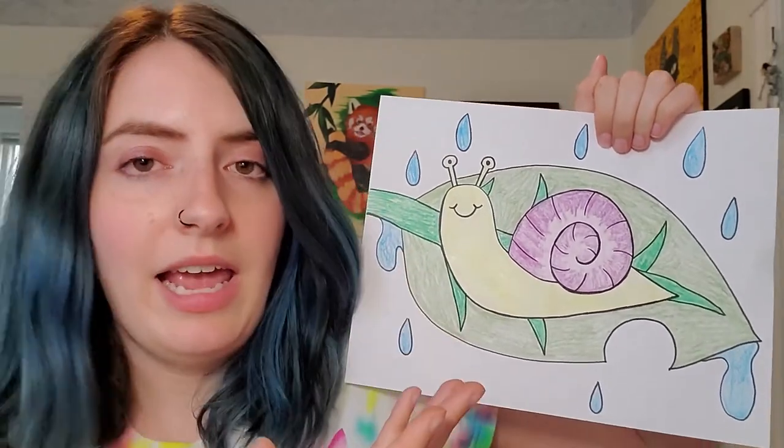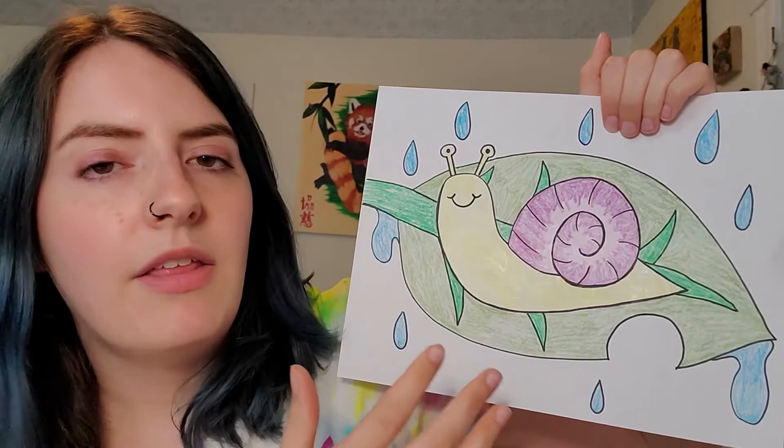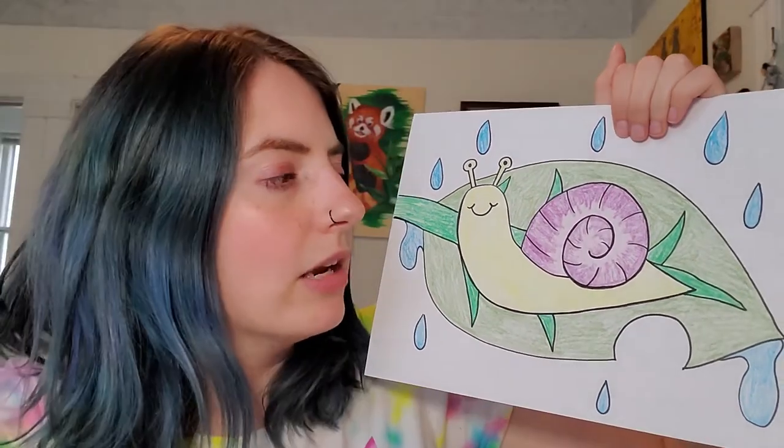And snails that live on land, instead of in my aquarium, they love rain and they love water. And you'll see them most often when the grass is wet, like after it rained or something.